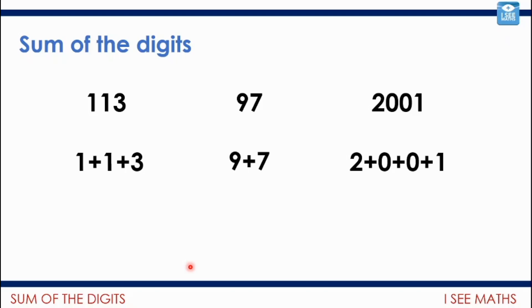So 113, the sum of the digits is 1 plus 1 plus 3, it's 5. The sum of the digits for 97 is 16, 9 plus 7, and the sum of the digits for 2001 is 3. 2 plus 0 plus 0 plus 1 equals 3. So, for example, despite being the largest number, 2001 has got the smallest sum of the digits.